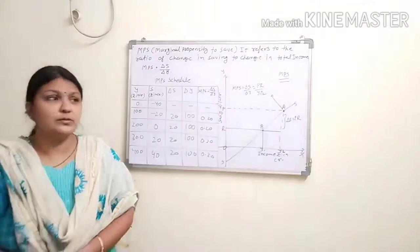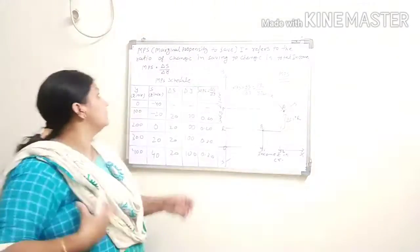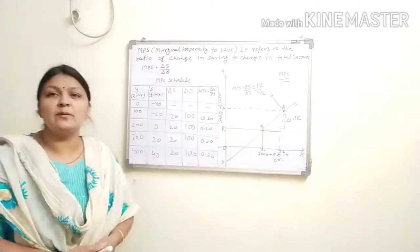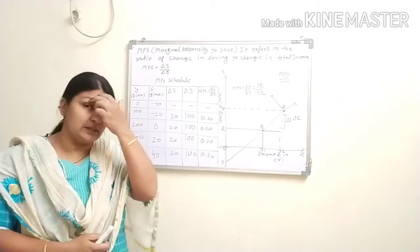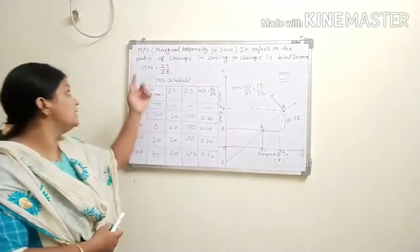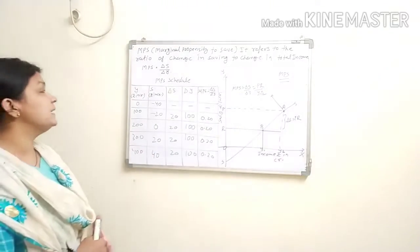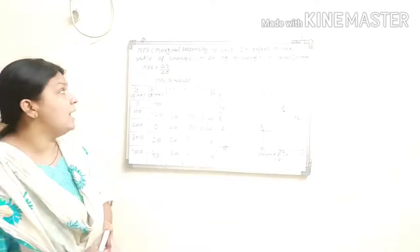Good morning students. Today we will start our next topic, that is the types of propensity to save — specifically the marginal propensity to save, meaning MPS.